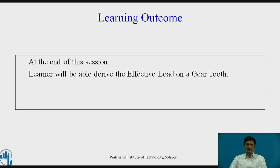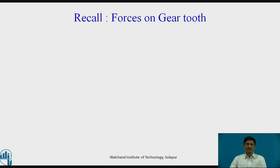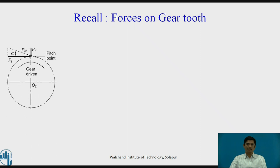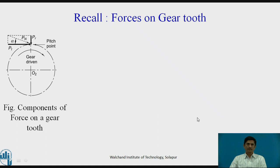At the end of this session, we will be able to derive the effective load on a gear tooth. Please recall what are the forces acting on the gear tooth — the components of forces on gear tooth. Pn is the resultant force acting at the pitch point when we consider the driven gear. At the pitch point, this resultant force is resolved into two components Pt and Pr. Pt is horizontal and Pr is vertical.